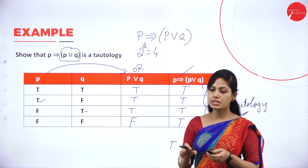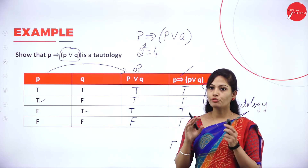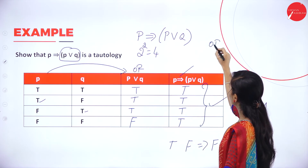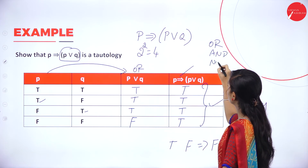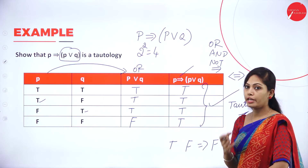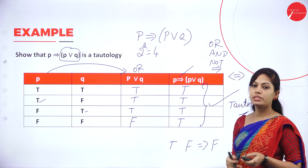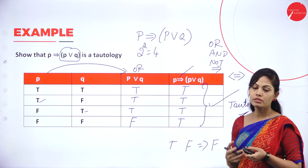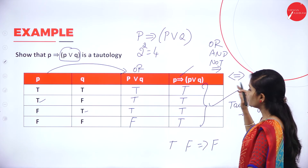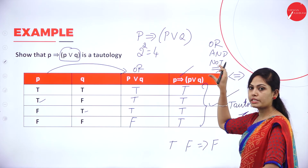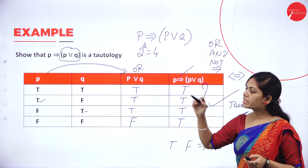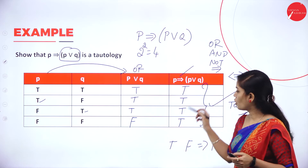Please first understand the truth tables. You must remember the truth table for OR, AND, NOT, conditional, and biconditional. Then only you can simplify whether a statement is a tautology or contradiction. This statement P → (P OR Q) is a tautology — always true.